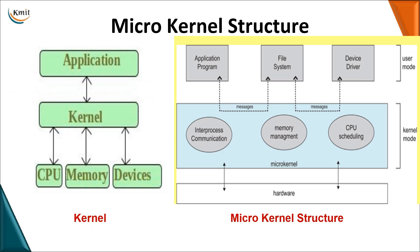We now move on to the third structure: the microkernel structure. First, what is a kernel? The kernel is a basic and important component of the operating system. It helps the operating system perform all of its services — CPU scheduling, memory management, device drivers, and more. The kernel is a major component that helps provide services to the user.